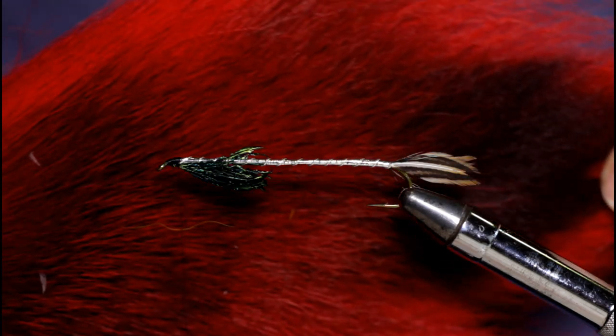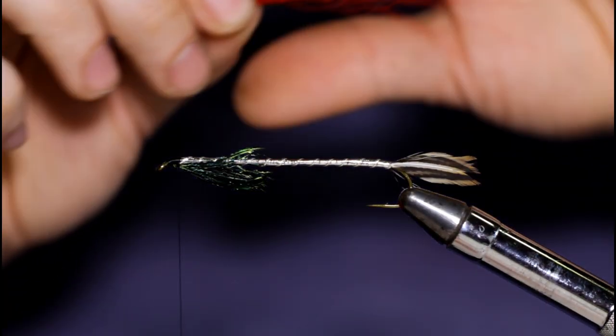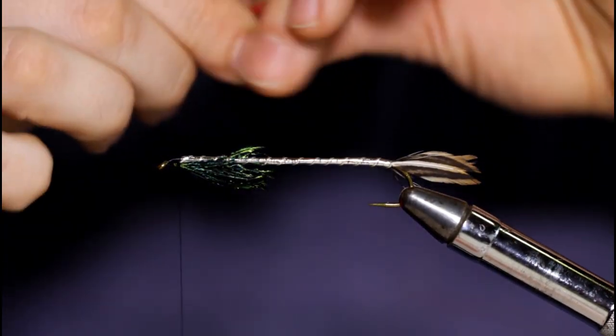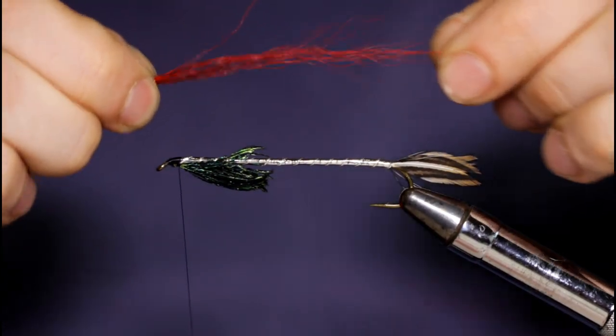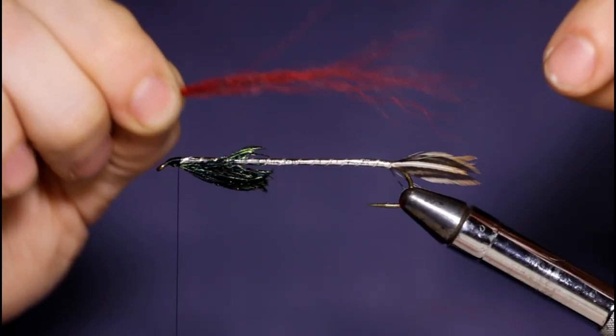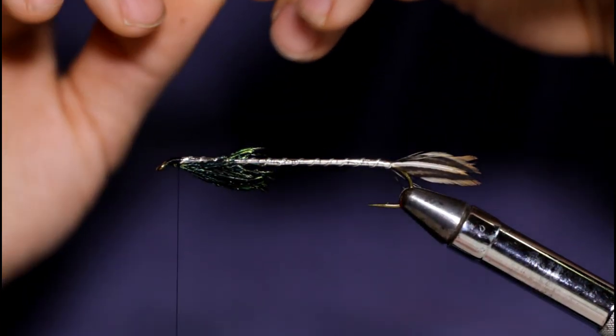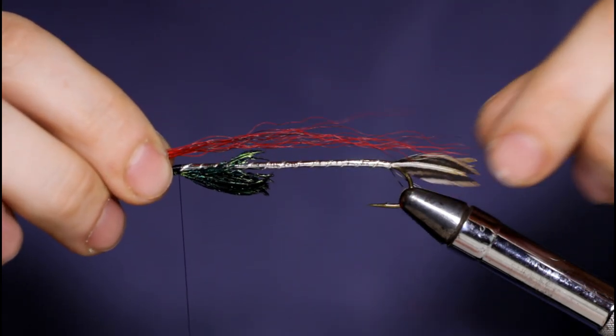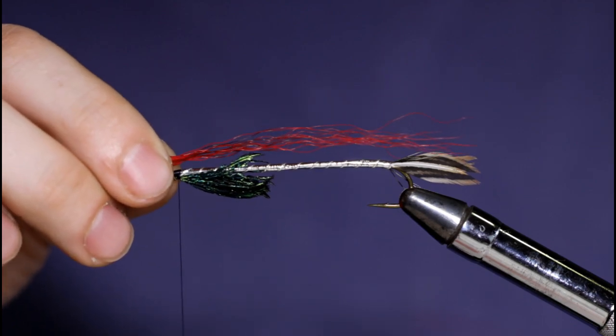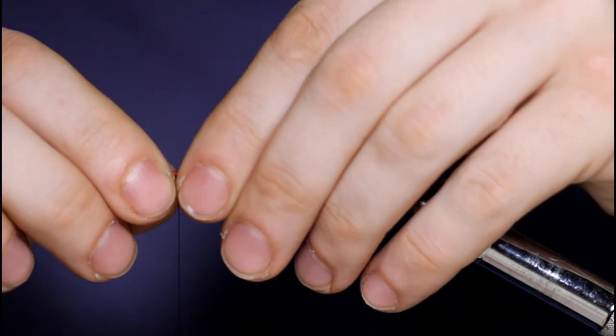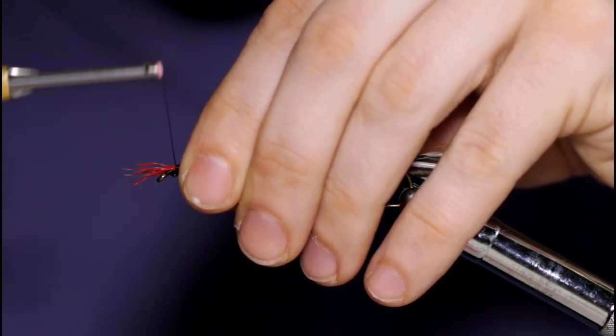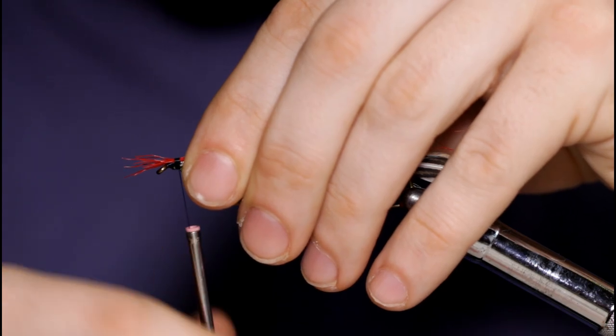Now a couple turns over the top here just to secure the material. All right, now it's time for the next material, some red bucktail. I'm going to snip off a clump here and pull out the short fibers and some of the stray fibers as well. Get a nice even clump here. Pull out those crazy ones there. You want it about the length of the tail. That'll work. And a loose turn over the top, a couple more forward, and then take the thread back to where you started.